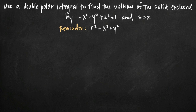Today we're going to be talking about how to use a double polar integral to find the volume of a solid. In this particular problem, we're going to find the volume of the solid enclosed by these two equations: negative x squared minus y squared plus z squared equals 1, and z equals 2.